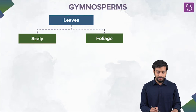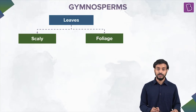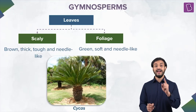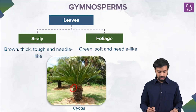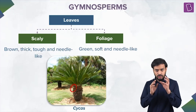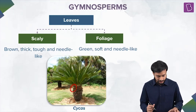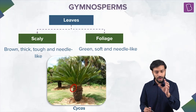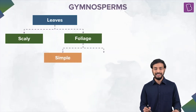Now, leaves — what are the forms of leaves? They can be scaly or foliage type. Scaly leaves are brown, thick, tough, and needle-like. Foliage leaves, on the other hand, are green and soft, and they can also be needle-like in shape.